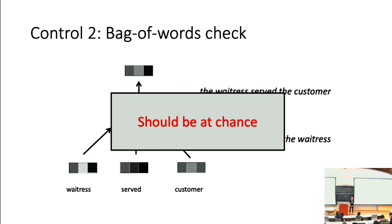For any task requiring access to word order, bag-of-words models should be at chance, and we control our items to that point. It's worth noting that Adi et al. had a word order detection task where their bag-of-words averaging model performed substantially above chance. This isn't entirely surprising, because word embeddings could have picked up on statistical regularities of order within the training corpus. But we're not interested in probing for general statistics — we want representations to capture not only 'the waitress served the customer' but also 'the customer served the waitress.' So this serves as a good baseline to compare against.